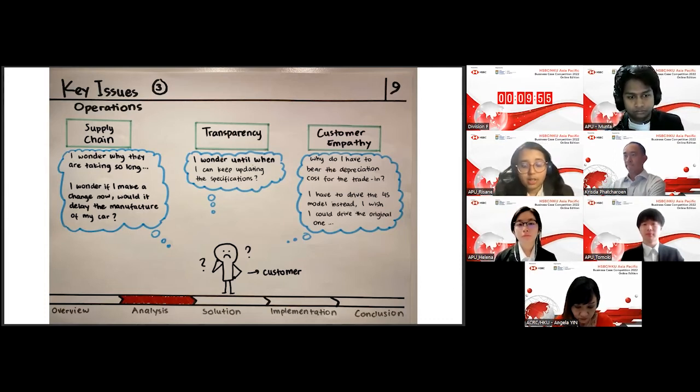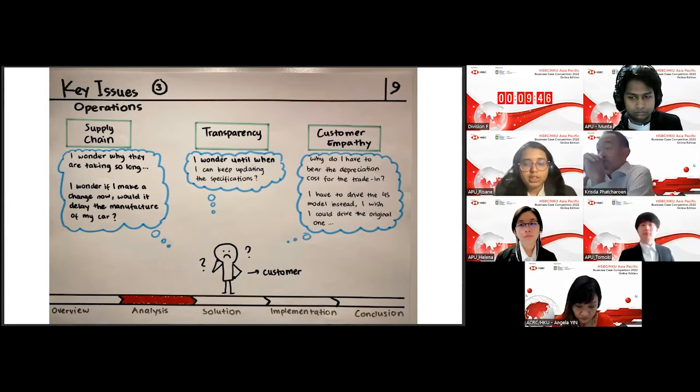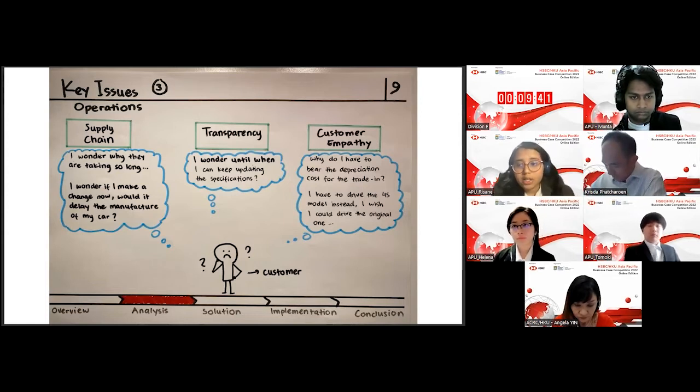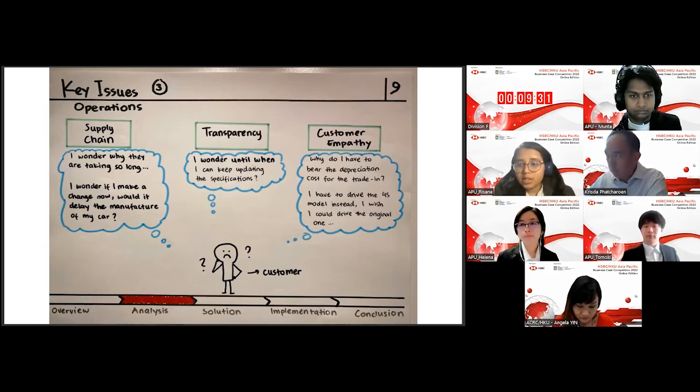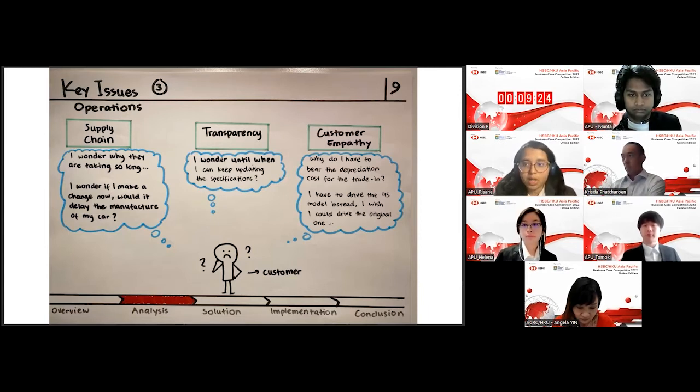Next off, they might be wondering, is it okay to continuously update without having any limits on the number of updates he can make? This shows that there could be a lack of transparency. Last but not least, Paul might be wondering, the company made a mistake. So why do I have to pay for the depreciation? Shouldn't they be accountable for that? Lastly, he might also be wondering that why did he have to drive the 4S model instead of the main model when he went for the test drive in the shop? This shows that there's a lack of customer empathy as well.